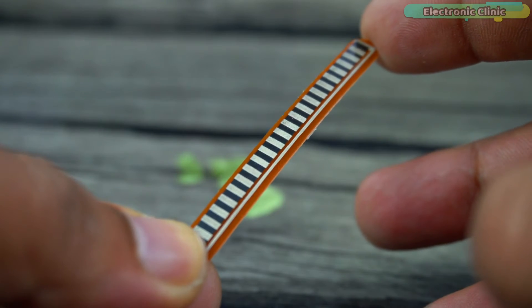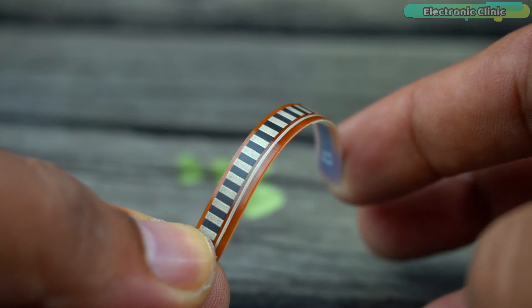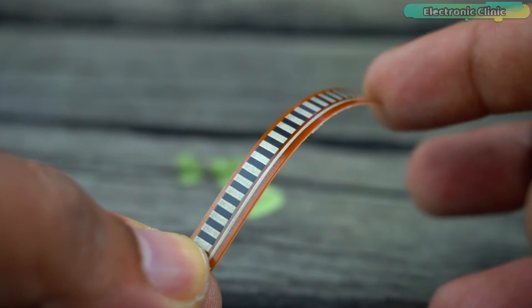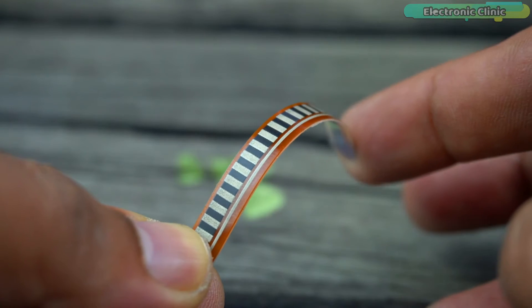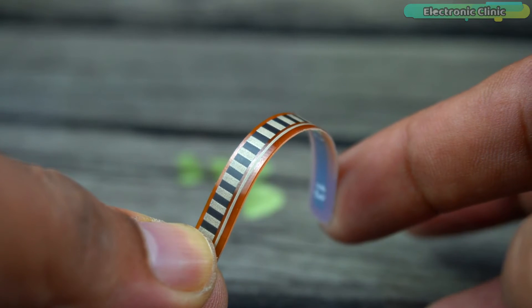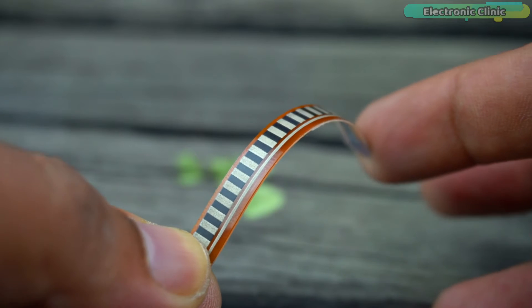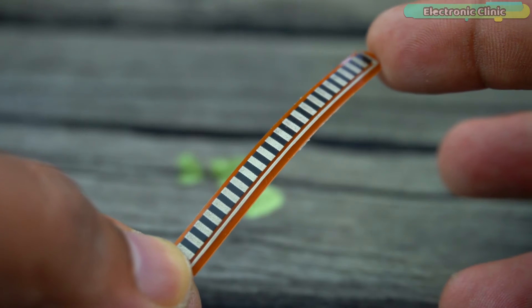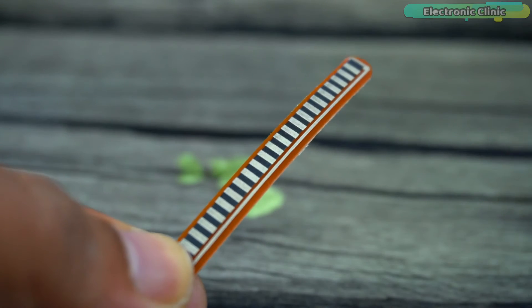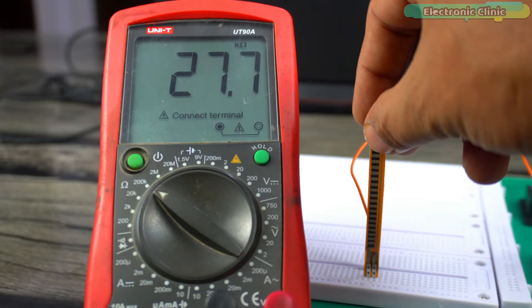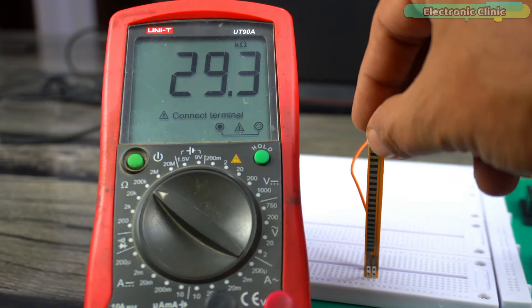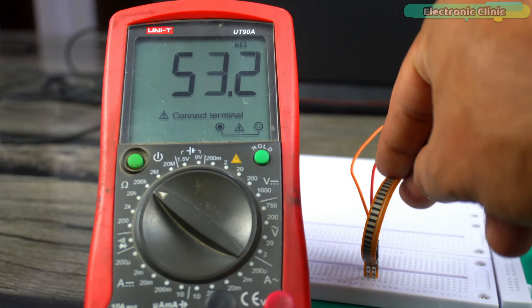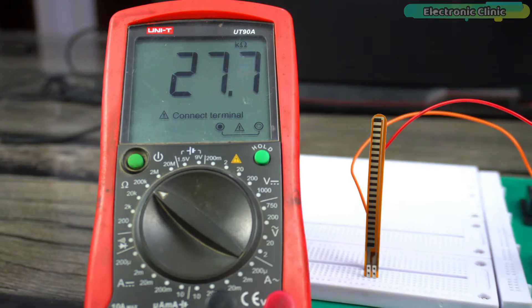When the flex sensor is subjected to mechanical stress, such as bending or curving, the arrangement of these conductive elements is altered. This in turn causes a change in the electrical resistance along the sensor's length. The degree of bending or flexing directly correlates with the magnitude of the resistance change, and this change in resistance can be measured and interpreted electronically, and this is what I am going to practically explain. So let's go ahead and start with our first example.